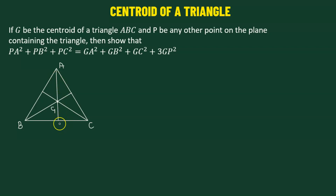So if we have the medians defined as AD, BE, and CF, these three medians are going to intersect at point G.